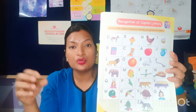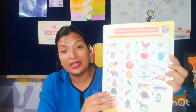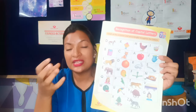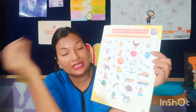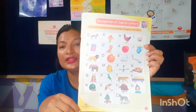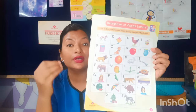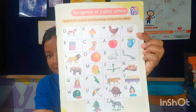Our first topic is recognition of capital letters. For UKG students, the alphabet has already been completed, so this is just a revision chapter. Here we help children recognize all the capital letters. You can see all the letters from A to Z with their pictures. This is the first chapter.